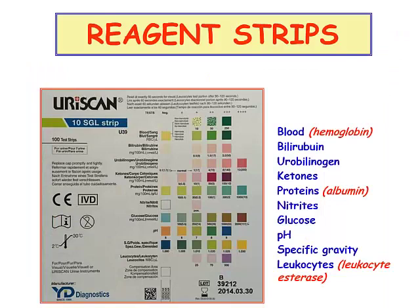This is the full spectrum of analytes which can be examined and tested with the multistick. You have blood, which is hemoglobin, bilirubin, urobilinogen, ketones, proteins — which actually is only albumin — glucose, pH, specific gravity, and leukocytes, which actually is leukocyte esterase.